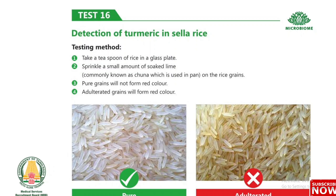Test 16: Detection of turmeric in colored rice. Take a teaspoon of rice in a glass plate and sprinkle a small amount of soaked lime (commonly known as chuna, used in paan) on the rice grains. Pure grains will not form red color. Adulterated grains will form red color.